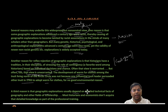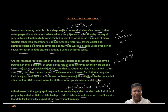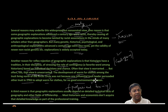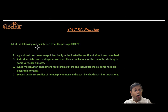A third reason is that geographic explanations usually depend on detailed technical facts of geography and other fields, and most historians and economists don't acquire this detailed knowledge as part of their professional training — so they denounce it. Three reasons then: racism, contingency, and professional training. The author's central analytical stance is that scholars denounce geographical factors, and the author is providing reasons why — while clearly being critical of that position.